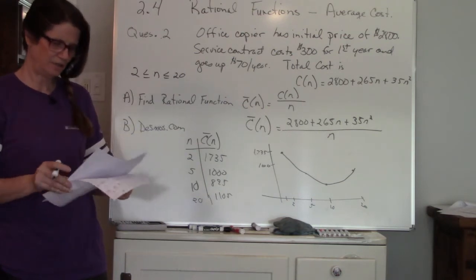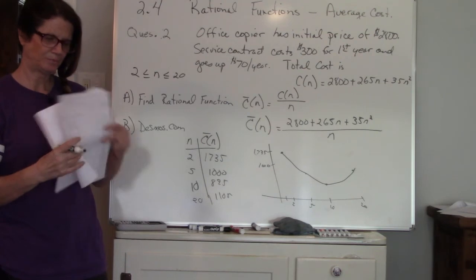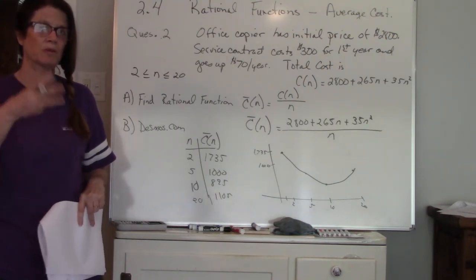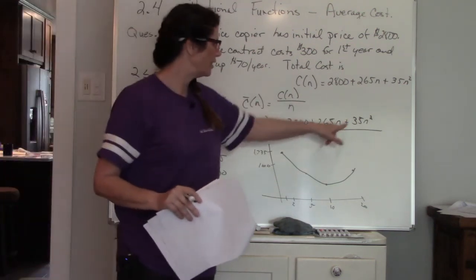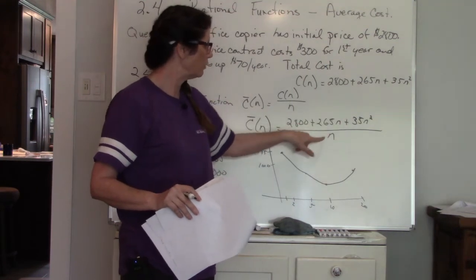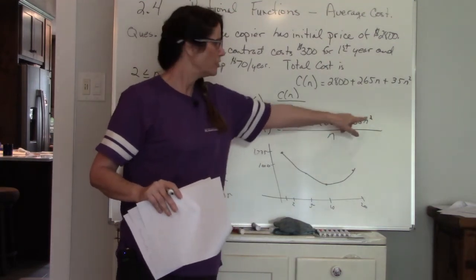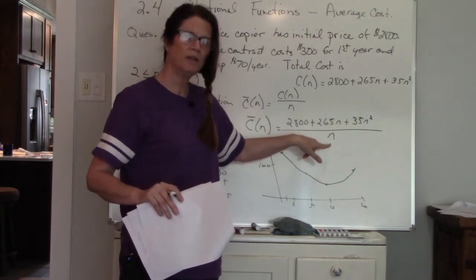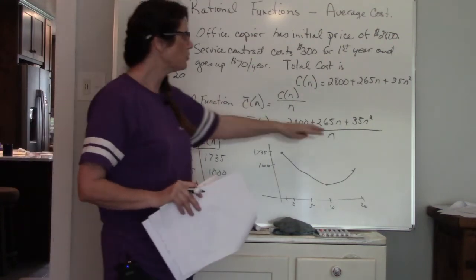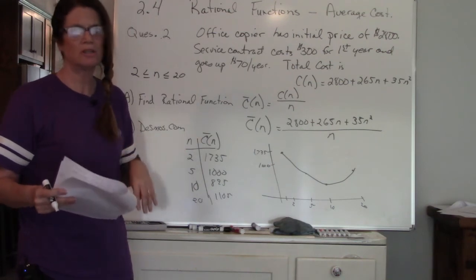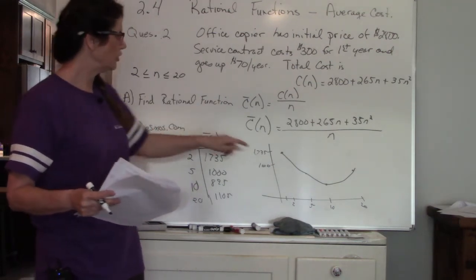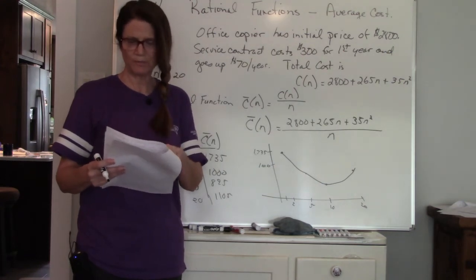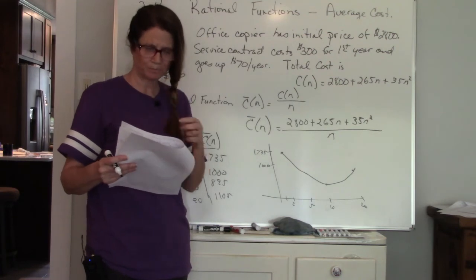We can look for our horizontal asymptote. Remember the three rules: if they're equal your horizontal asymptote is at the ratio of the leading coefficient, so in this case if these were equal it would be 35 over 1. They are not equal. The top is higher than the bottom which means there is no horizontal asymptote. If the top was less than the bottom the asymptote would be at y equals zero. You have to look at the graph that you've created, look at the examples that they give you and eliminate ones that don't work. Start eliminating them.